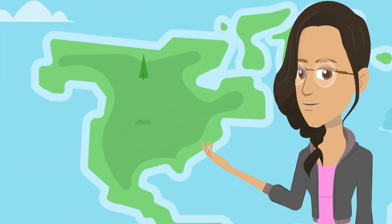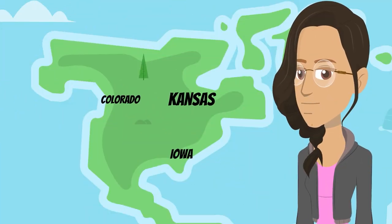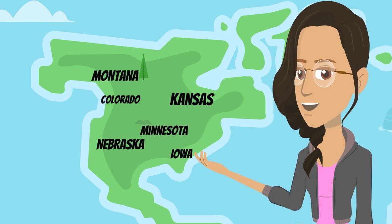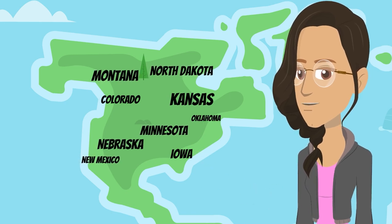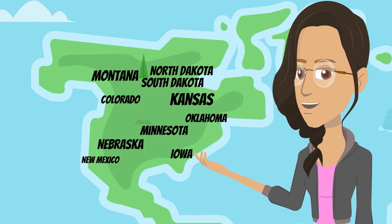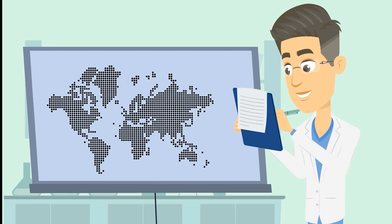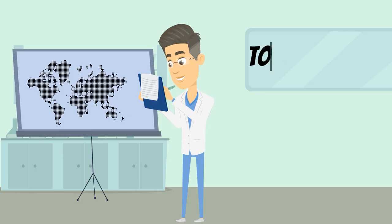It covers the states of Colorado, Iowa, Kansas, Minnesota, Montana, Nebraska, New Mexico, North Dakota, Oklahoma, South Dakota, Texas, and Wyoming. Most of these states are included in what scientists call Tornado Alley, because these are where most of the twisters form and wreak havoc.